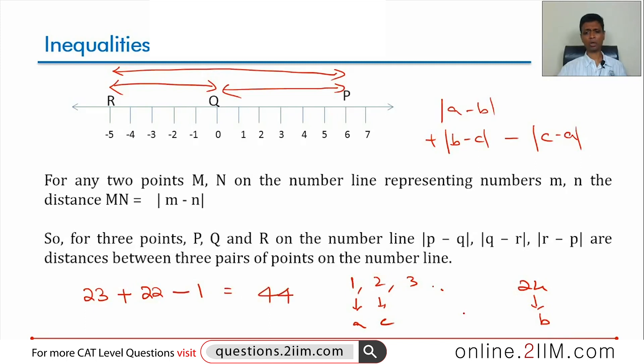The maximum possible value of that expression is 44. When A and C are very close to each other and in one extreme and B is on the other extreme, as high as possible or as far away from A and C as possible.